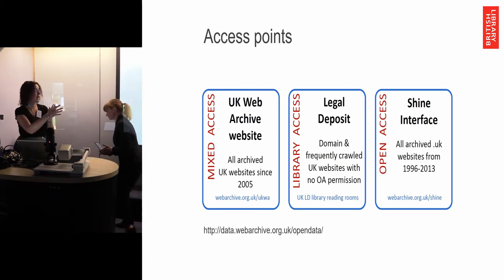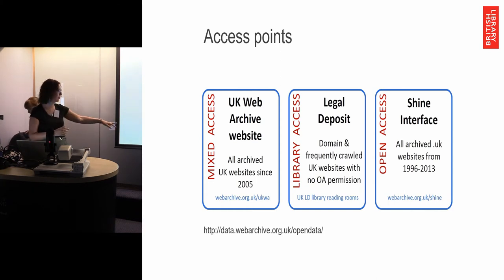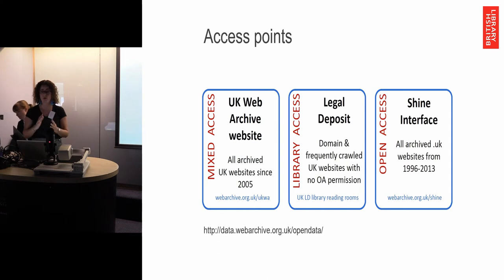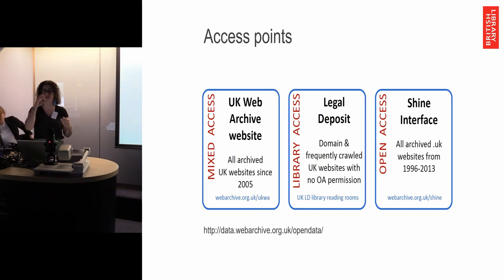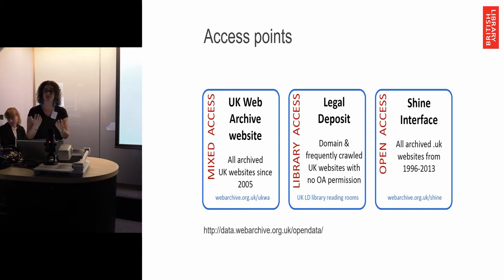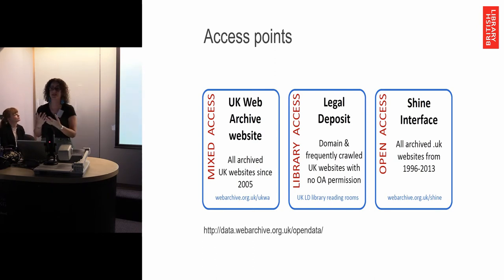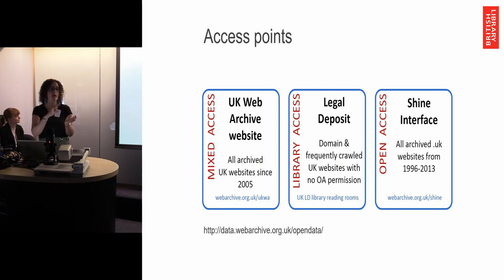We have four access points to the UK web archive, but three of them are browsable, and the fourth is just some datasets taken from metadata — that's fully open access and you can download it and work with your own tools on that data. So we have mixed access. In November last year we launched a new interface, and that gives us mixed access — it highlights what you can only view in the reading room. Through the website you can see what's reading room only and what's open access and filter your search that way. We've also got the legal deposit content accessible through the catalogues in the legal deposit library reading rooms. And then we've got the Shine interface — all the .UK websites archived by the Internet Archive from 1996 to April 2013 when the regulations came into effect.